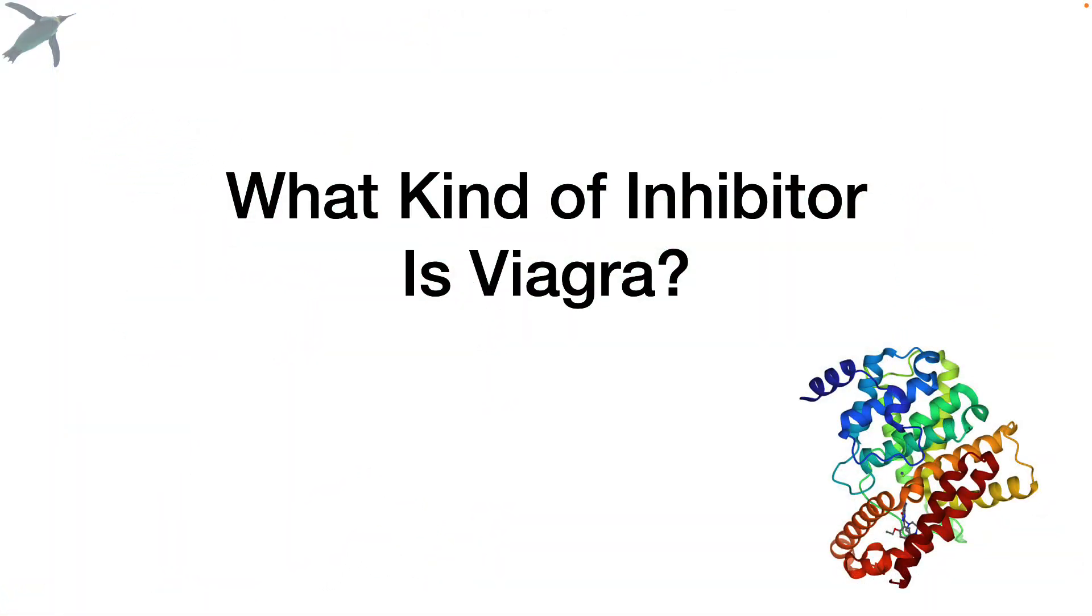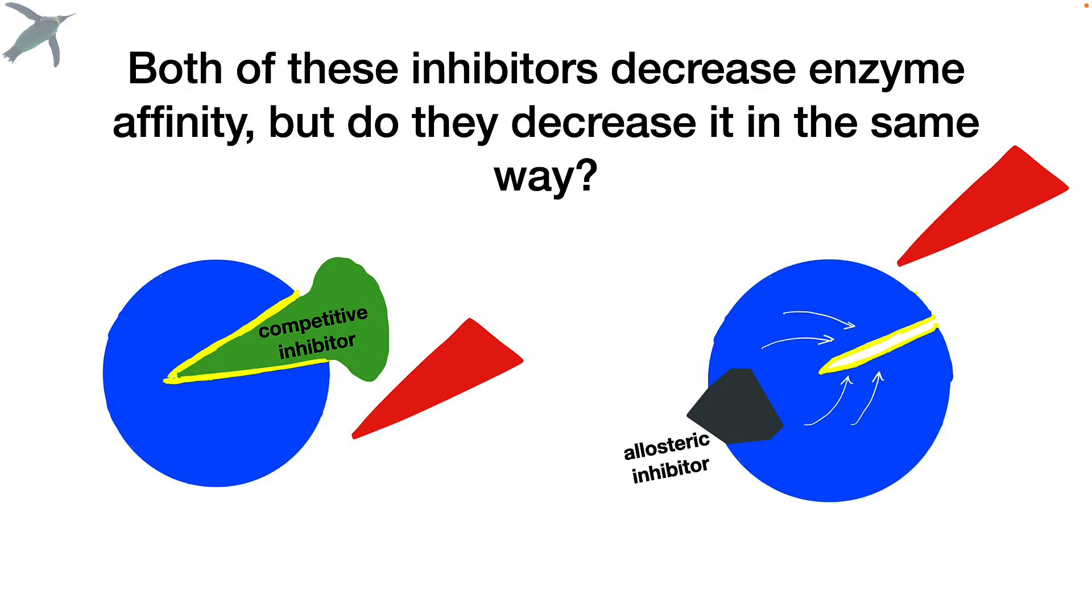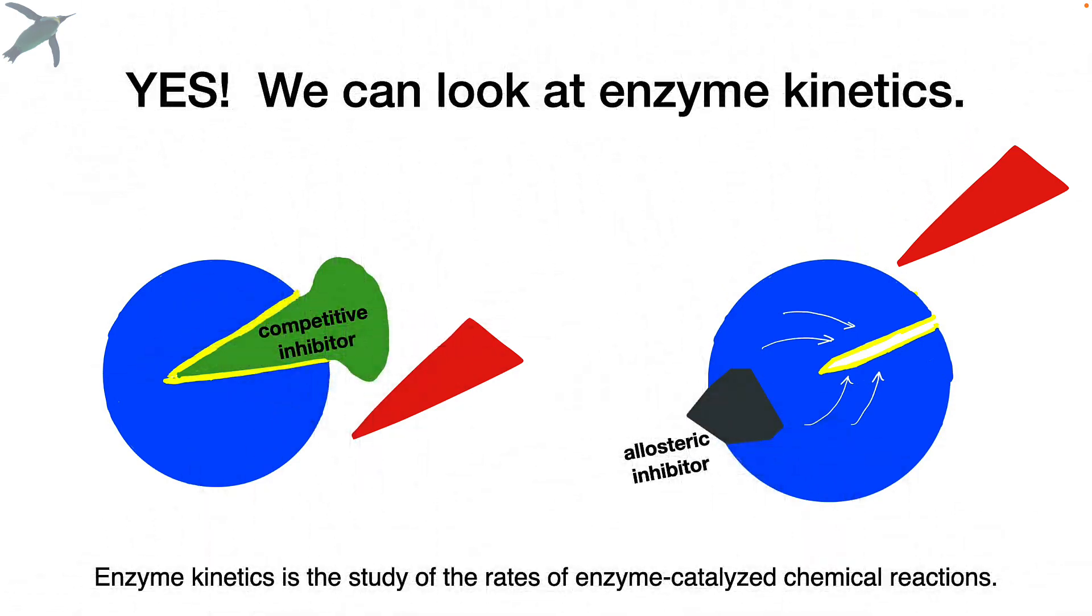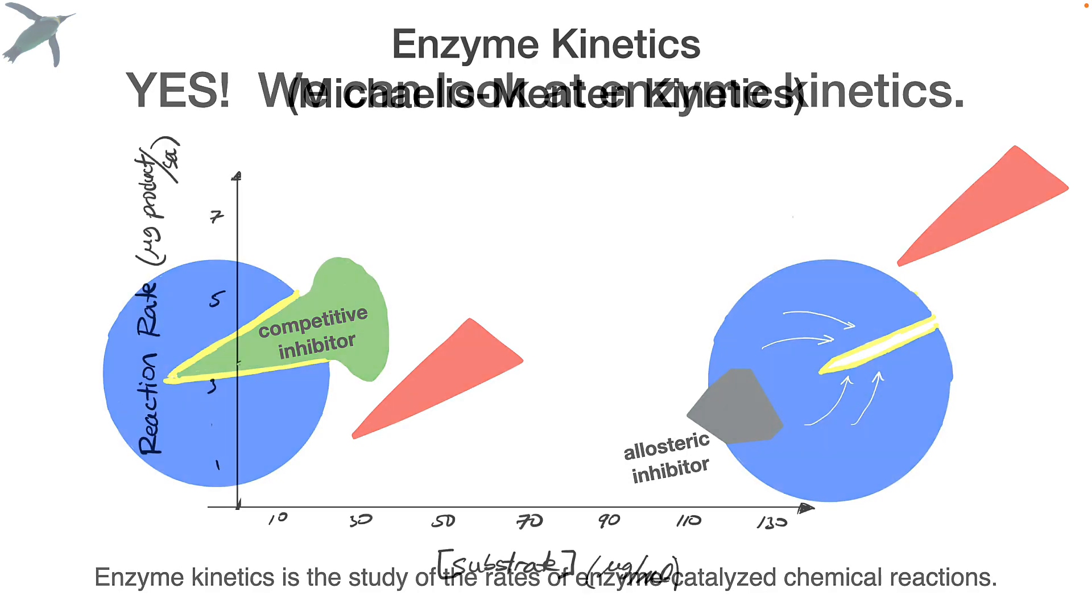Is it competitive or allosteric? Both competitive and allosteric inhibitors decrease enzyme affinity, but do they decrease it in the same way? Is there a way to see what kind of inhibition is going on? And the answer is, yes, that's why I'm here. And that's why we're talking about enzyme kinetics.